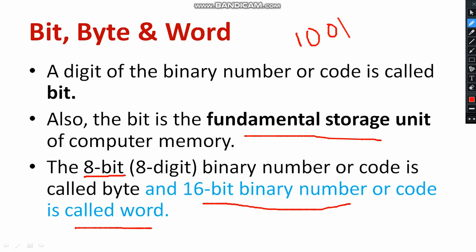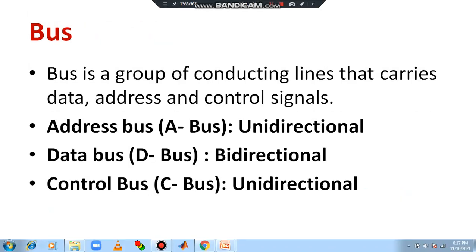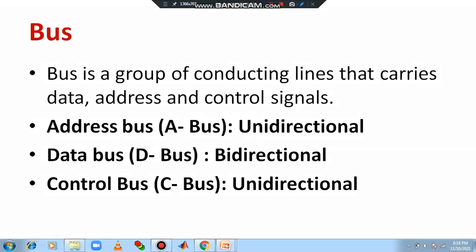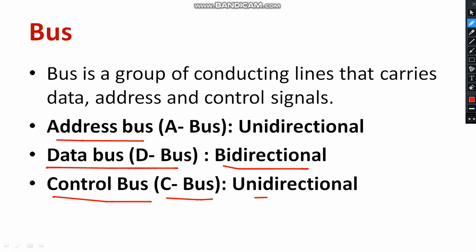A 16-bit binary number or code is called a word. You can expect some questions related to these points. Now, you need to understand what a bus is and why it is required. A bus is a group of conductors used to transfer signals — to address memory and to transfer control signals. There are three types of buses in the 8085 microprocessor: the address bus, which is unidirectional; the data bus, which is bidirectional; and the control bus, which is also unidirectional.